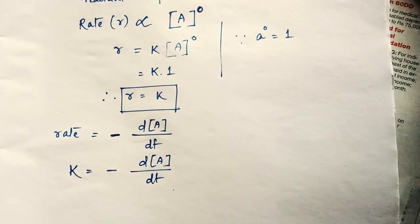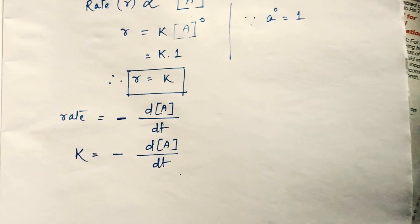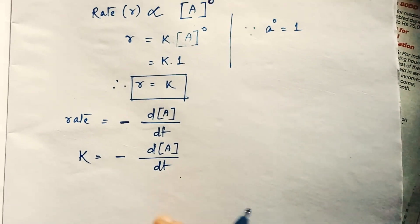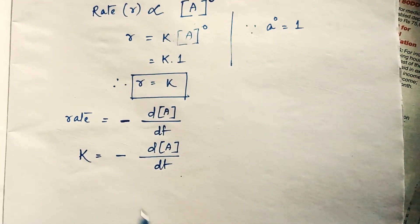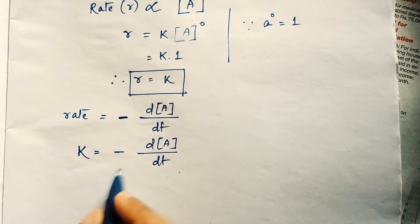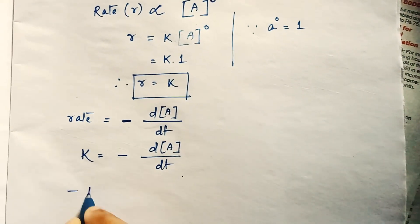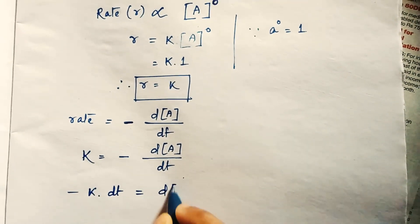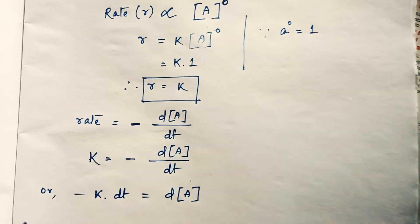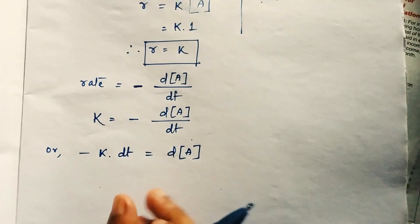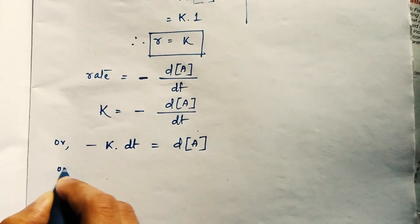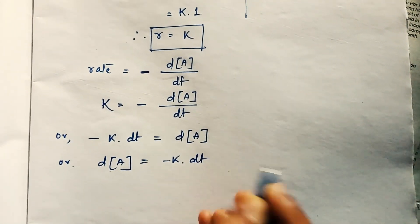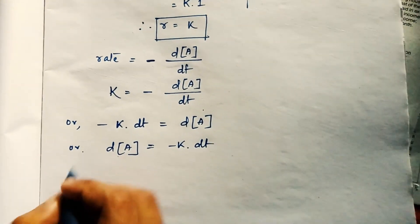Now we can move dt from the right-hand side to the left-hand side, giving us: -k · dt = d[A]. We can also write this as d[A] = -k · dt, just by changing sides.